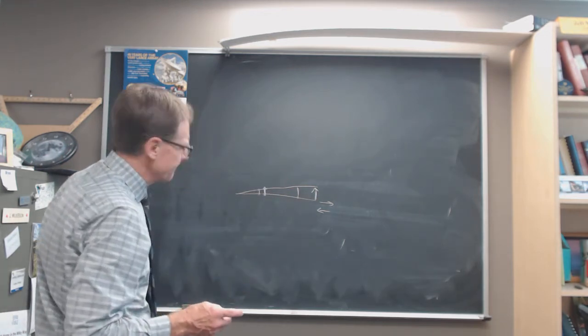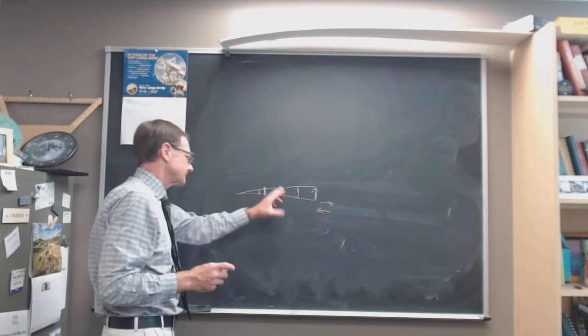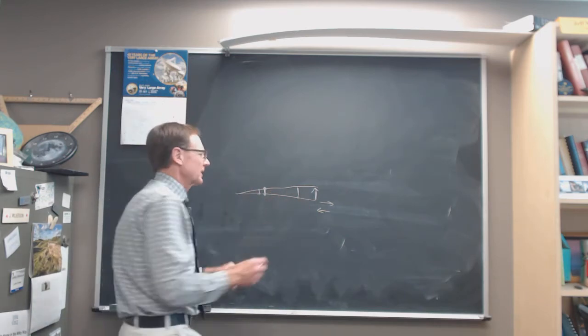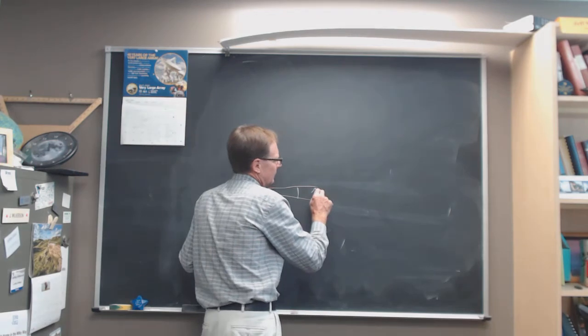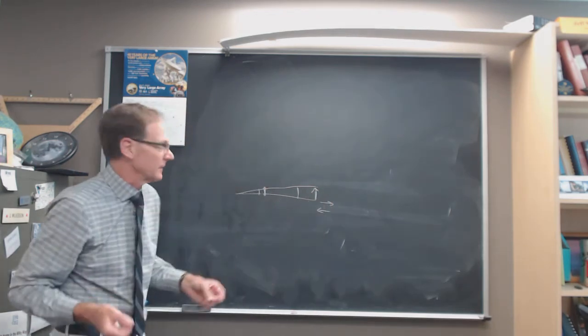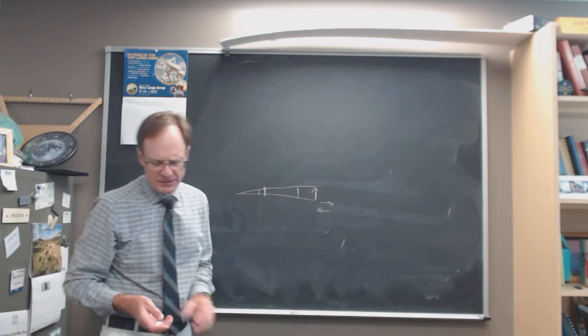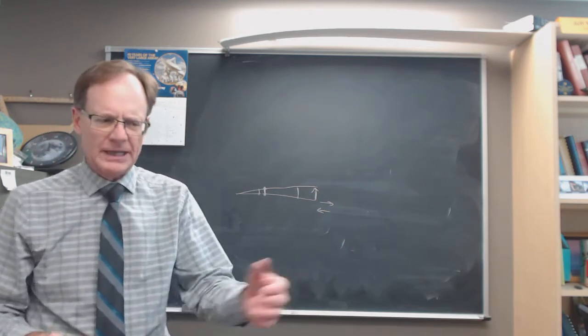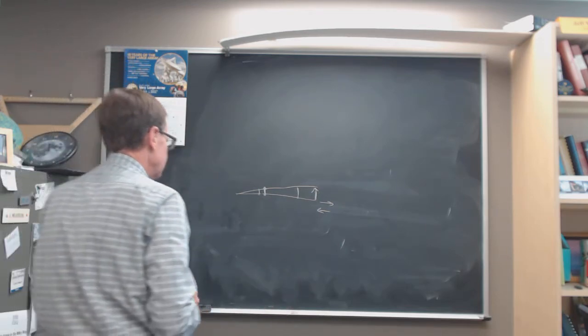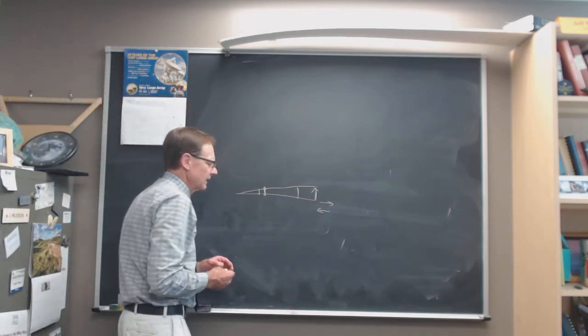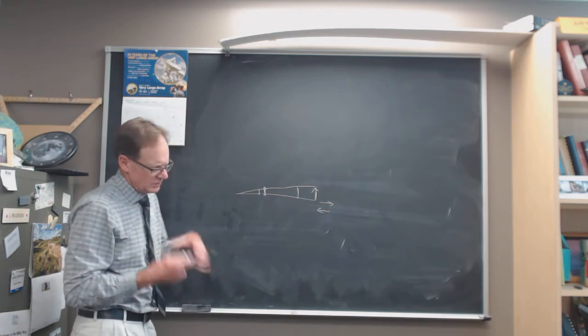And to say, okay, we're looking at this, so we need to know the distance. If we want to turn this into an actual physical space velocity, we need to know the distance to Barnard's star, and we can get that from parallax as you walk through in the exercise right there.